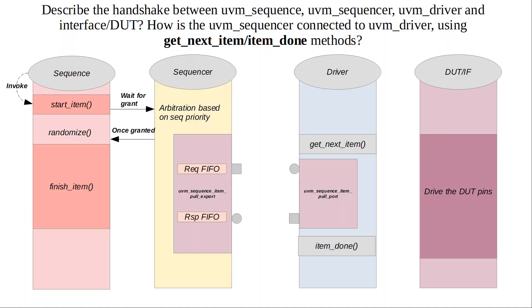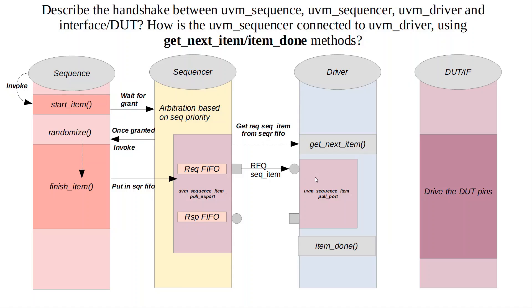At this stage, randomization after start_item is considered just-in-time or late randomization, because at this point the testbench variables and environment variables are most up to date. The next step is to invoke finish_item, which is again a blocking call. This will put the transaction into the request sequence item FIFO of the sequencer. Here I'm showing the actual connection that happens between the port and the export port of the driver, where you're sending the request sequence item.